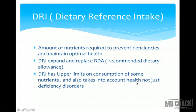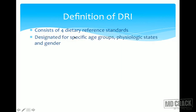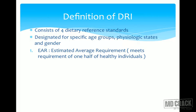RDA was based only on preventing deficiency disorders. DRI looks at how to maintain health, not just relieve deficiency — because as deficiency disorders have decreased, better values are needed. DRI is designated for specific age groups, physiological states, and genders. It consists of four dietary reference standards.